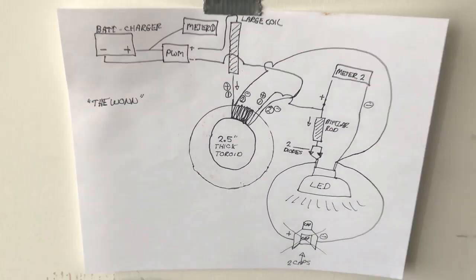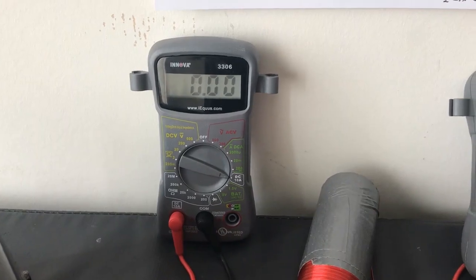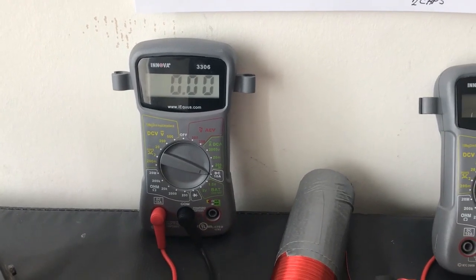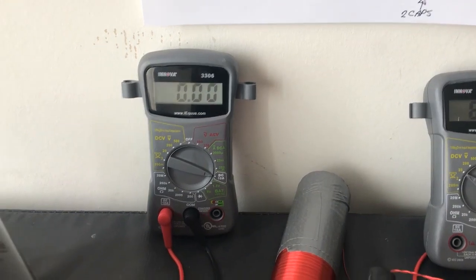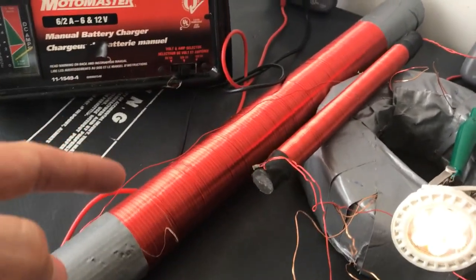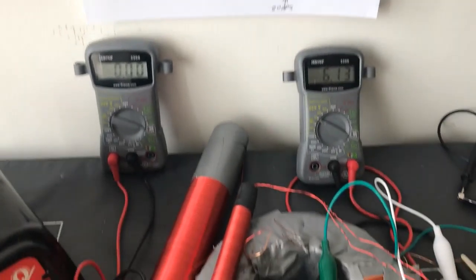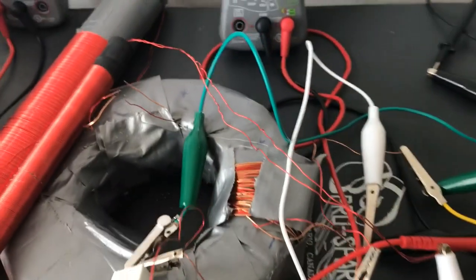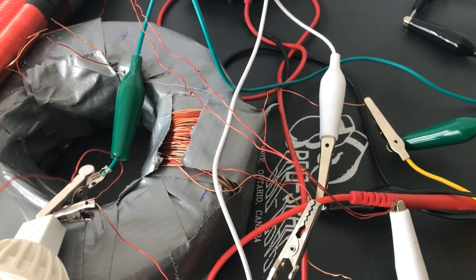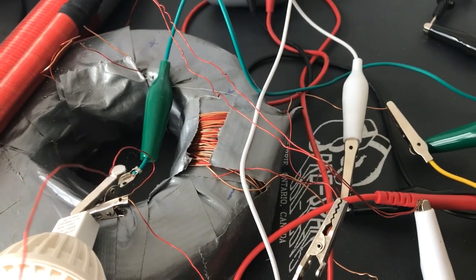As you can see, I've got meter one over here. Meter one is hooked up to the battery charger and then to the PWM to show the power input to the PWM. The PWM is then hooked up to the large coil which is right here, and then that large coil goes into a winding around the toroid. That is a double winding of two different size thickness of magnet wire.